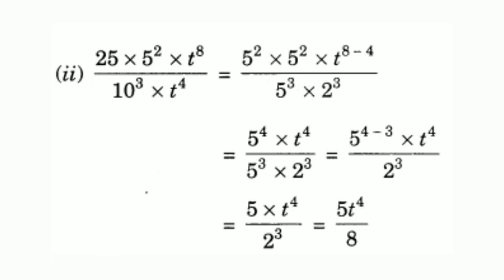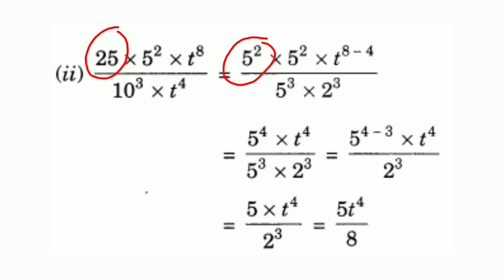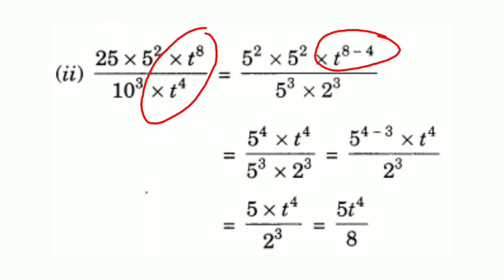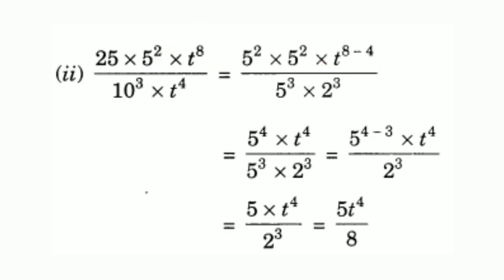Next, simplify: 25 into 5 squared into t raised to 8, all divided by 10 raised to 3 into t raised to 4. On the numerator, the first number is 25. 25 can be written as 5 into 5, that is 5 squared, into again 5 squared, into t raised to 8. In the denominator, t raised to 4. Applying division laws of exponents, we can write t raised to 8 minus 4.